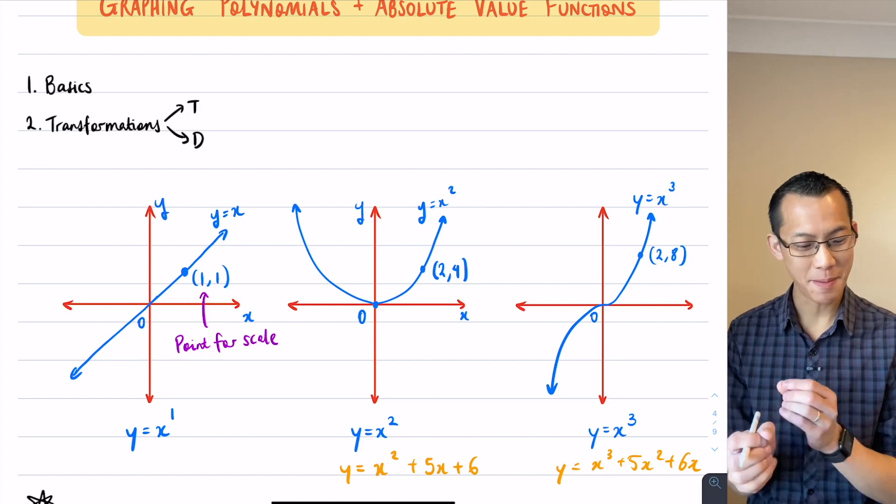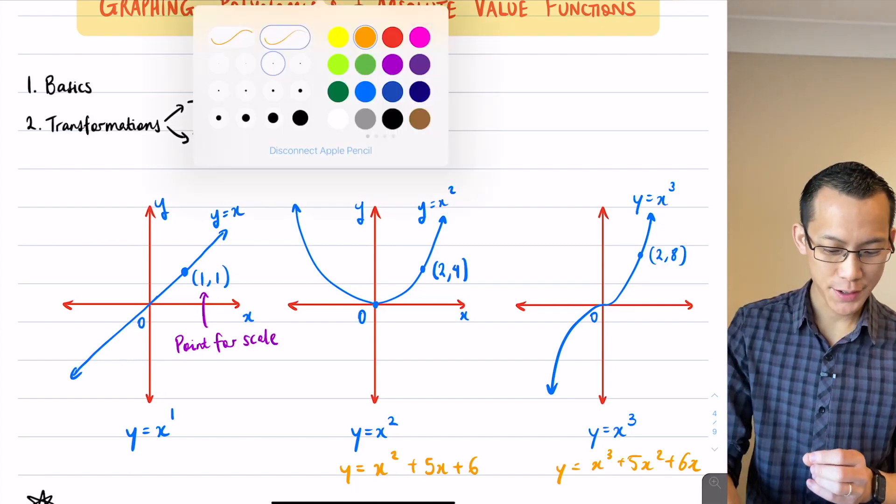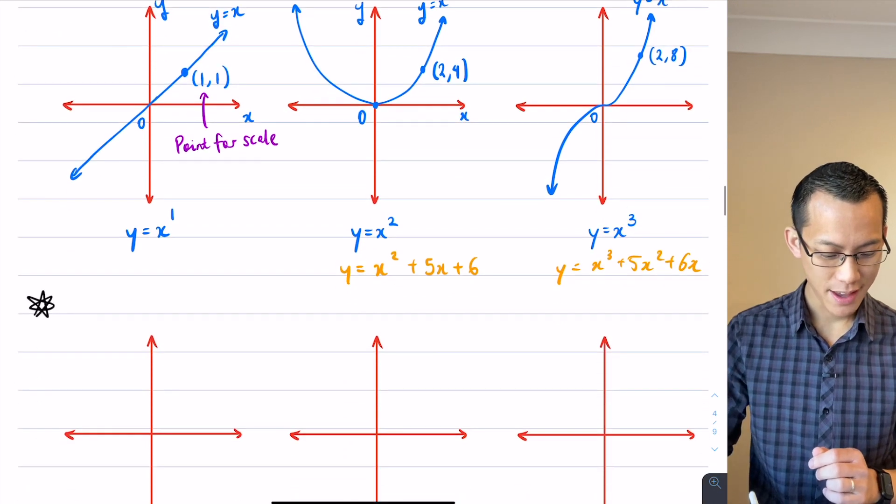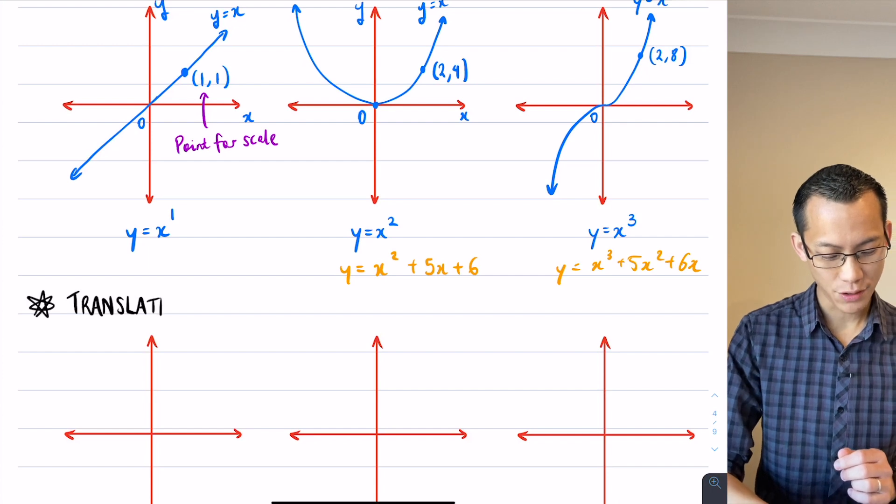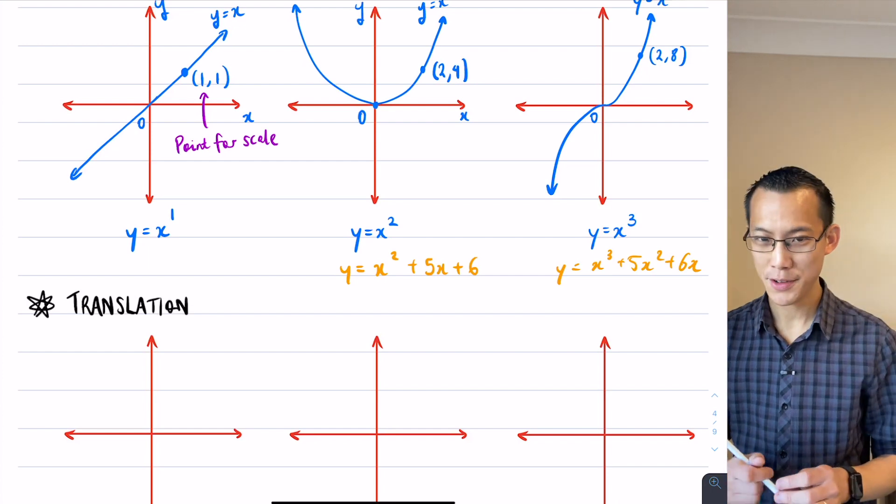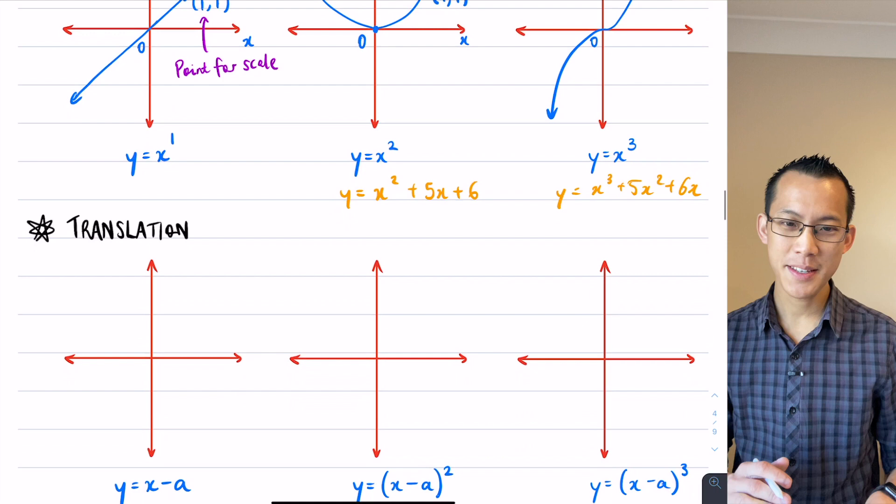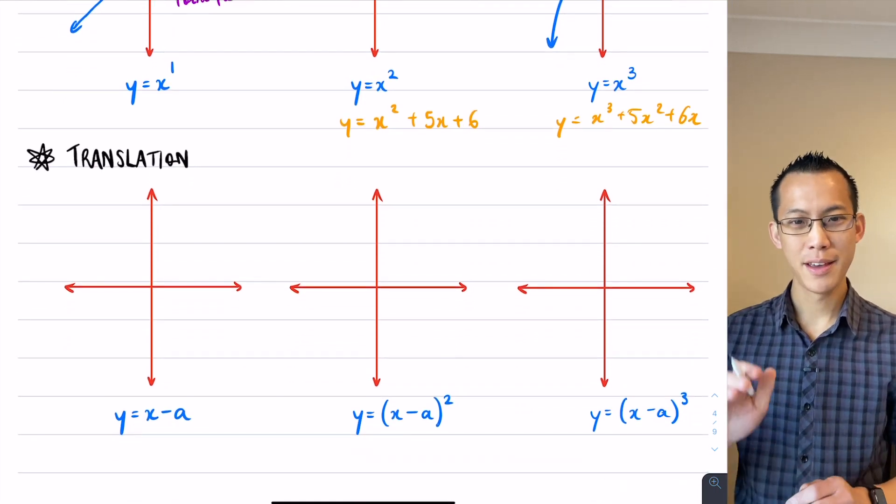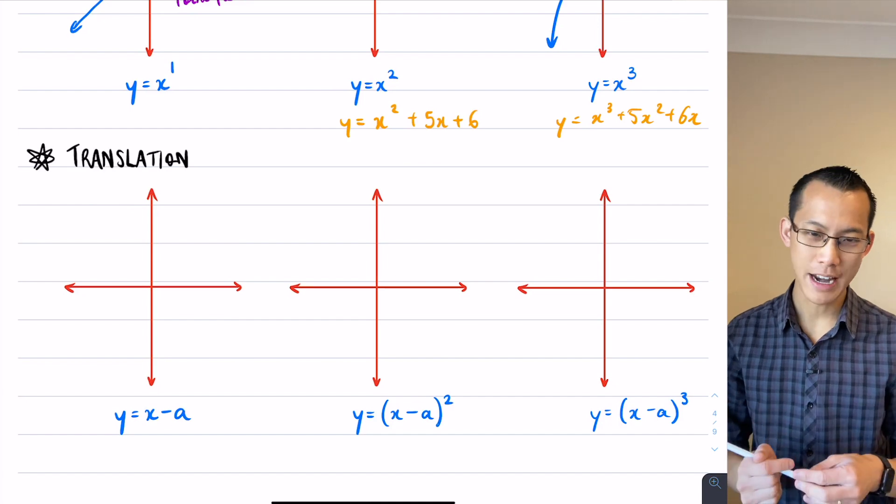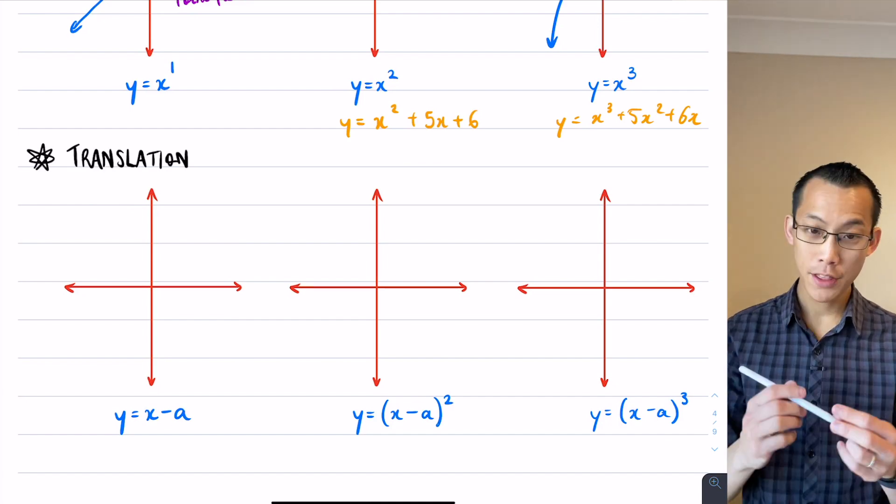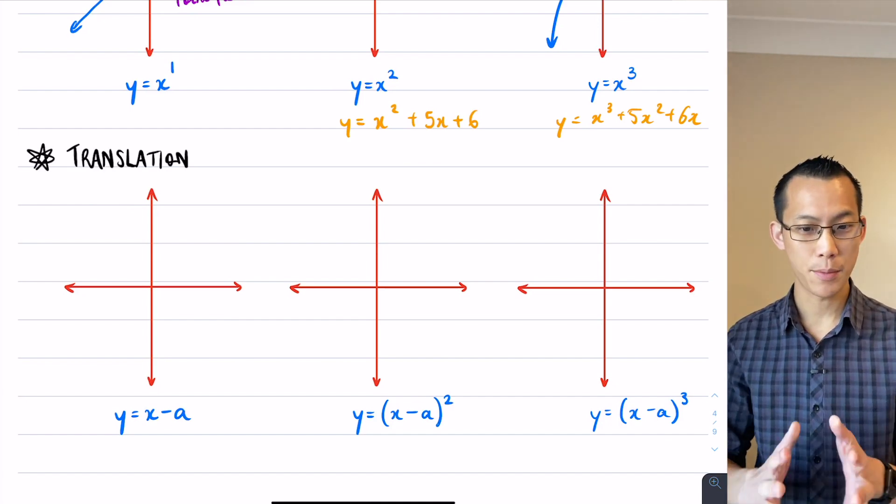These are the basic graphs we're going to be inspecting and transforming. The first transformation we're going to have a look at, like I said it starts with T, and it's called translation. So you need to call back your knowledge of year 7 geometry to remember this word.